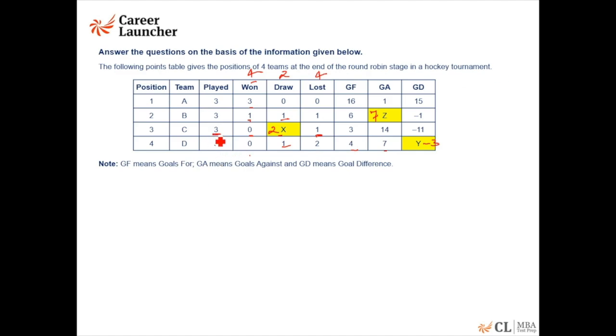What is the goal difference between the two teams in match A versus C? Now team A has won all 3 matches. So when A has played against B, A has played against C, A has played against D, it has won all the 3 matches. Team C has played 3 matches, lost one obviously. That means it has lost against A.